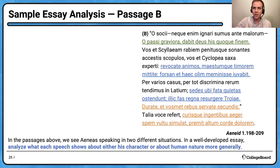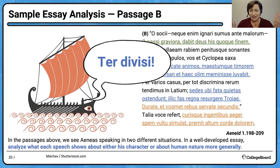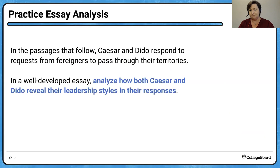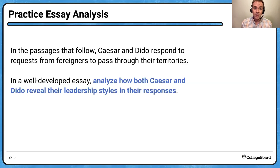Let's practice some more. In the passages that follow, Caesar and Dido respond to requests from foreigners to pass through their territories. In a well-developed essay, analyze how both Caesar and Dido reveal their leadership styles in their responses. We're going to focus on leadership. I'll take Passage A, you do Passage B. Pause the video, go through the passage, and write down the Latin you might cite or outline the points you'd make in an essay.